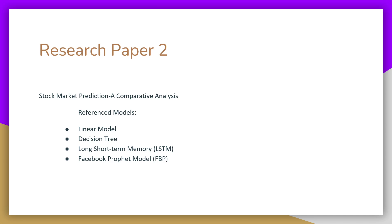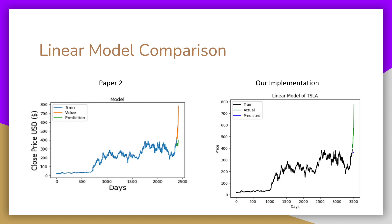For research Paper 2, it's called Stock Market Prediction: A Comparative Analysis. The models it used were a linear model, a decision tree, a long short-term memory, and a Facebook Prophet model. For the linear comparison, the results are pretty comparable.